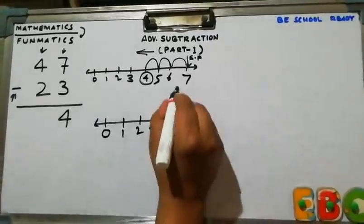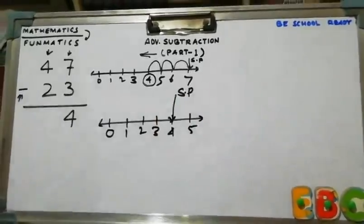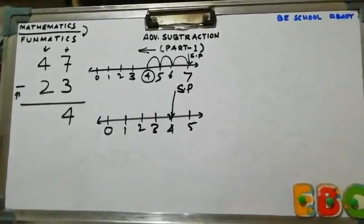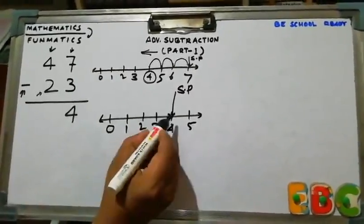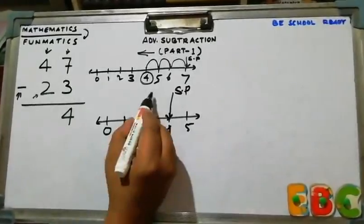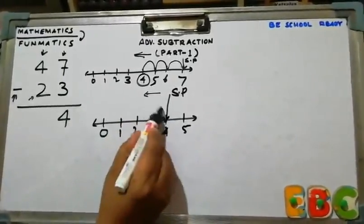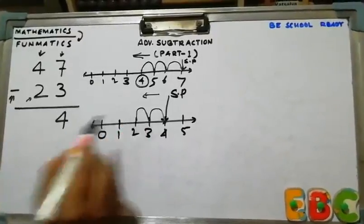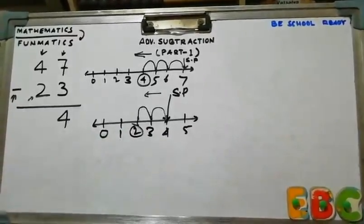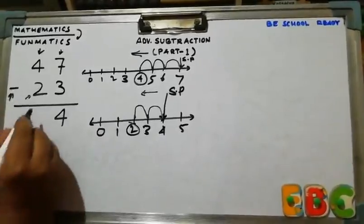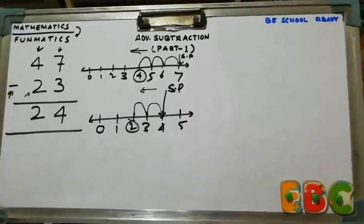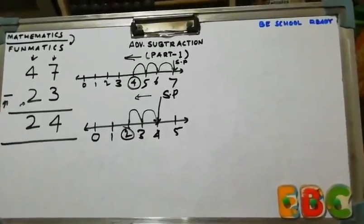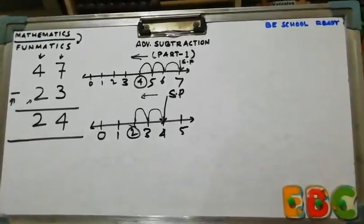This is our starting point and how many jumps we have to take? 2. So from here, we have to take 2 jumps in reverse direction. First jump, second jump, which is at 2. So 4 minus 2 is 2. The number became 24. So 47 minus 23 is 24.